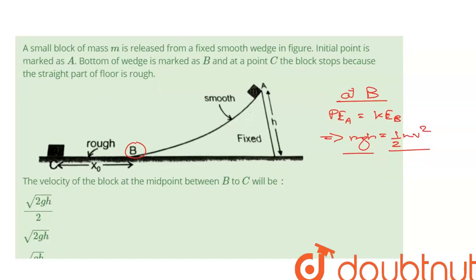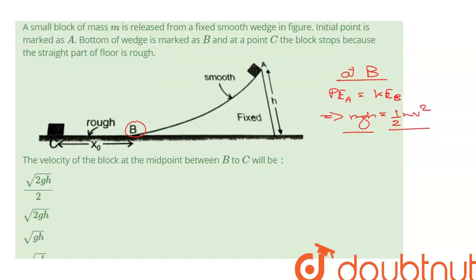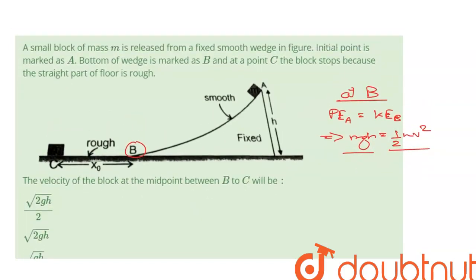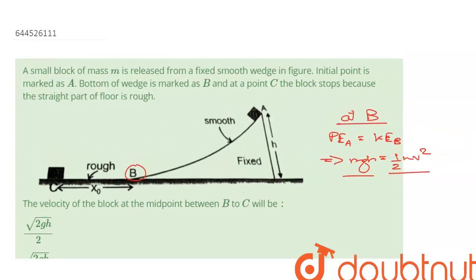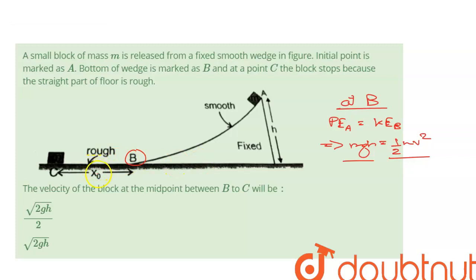Now we don't have an expression for the coefficient of friction here, so we need to find that out. Since the block stops after traveling a distance of x0, that means in traveling this distance x0, this entire kinetic energy that the block had—mark it as equation 1.